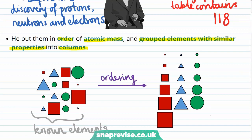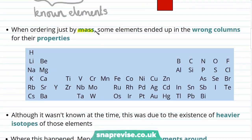This method was generally successful, but when ordering just by mass, some elements ended up in the wrong columns for their properties.